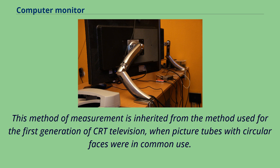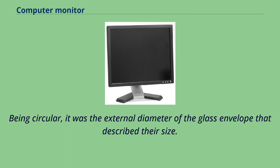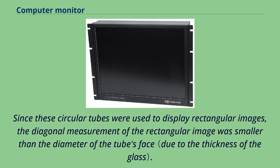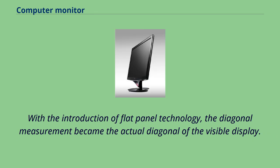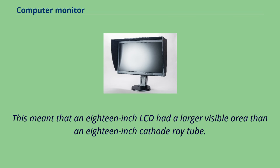This method of measurement is inherited from the method used for the first generation of CRT television, when picture tubes with circular faces were in common use. Being circular, it was the external diameter of the glass envelope that described their size. Since these circular tubes were used to display rectangular images, the diagonal measurement of the rectangular image was smaller than the diameter of the tube's face. This method continued even when cathode ray tubes were manufactured as rounded rectangles. With the introduction of flat panel technology, the diagonal measurement became the actual diagonal of the visible display, meaning that an 18-inch LCD had a larger visible area than an 18-inch cathode ray tube.